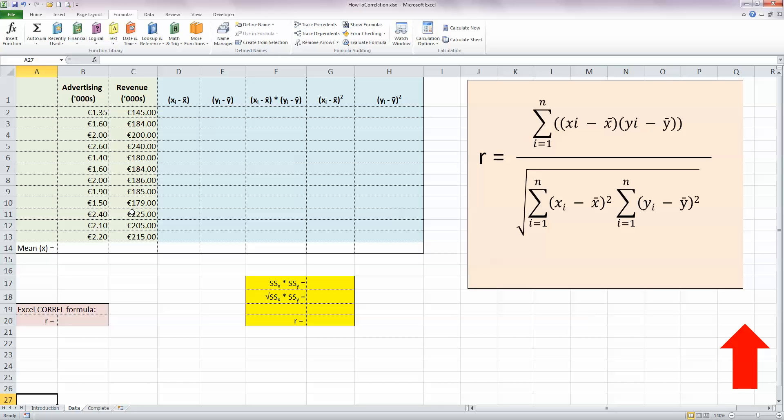Now Excel allows us to do this in two ways. First off there's a very simple and straightforward method by using the Corel function within Excel. So let's go and do that one first and I'm going to put that over here in cell B20. I've got it set up here so that I've got R equals and I need to use the Excel formula.